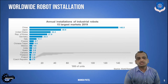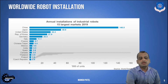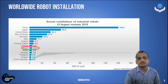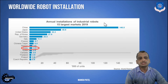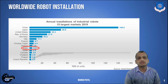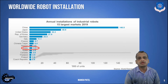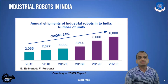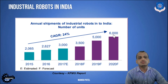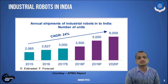Looking at worldwide robot installations from 2019 figures, India has almost 4,300 units of installations — comparing to China at almost 140,500 units. India is catching up in industrial automation and robotics, which is a key component of Industry 4.0. Forecasts show growth from 4,000 to 6,000 units by end of 2020, which is a very good trend.